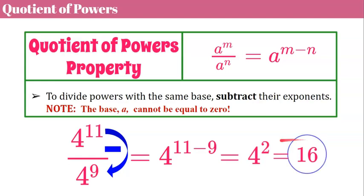So let's think about why this works. If we have four to the eleventh, that's eleven fours being multiplied by itself in our numerator. Our denominator would be nine fours. So if I simplified all of this,